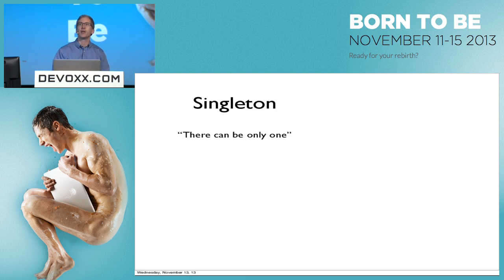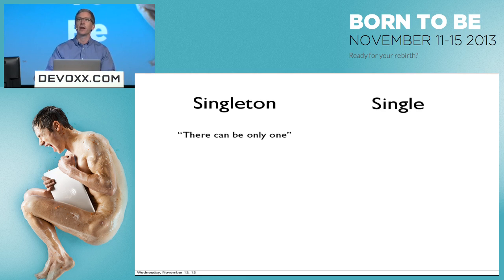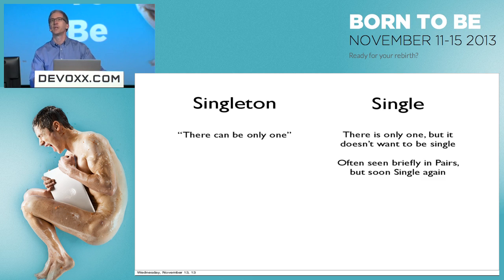The singleton pattern is also known as the Highlander pattern — there can be only one. This is global access to a single instance in the entire system. Similar to that is the single pattern. The difference here is that singles don't actually want to be single; they would really like to be with someone else. They're often seen in pairs, but only briefly. Variants of this pattern are known as the depressed pattern, sometimes the suicidal pattern.